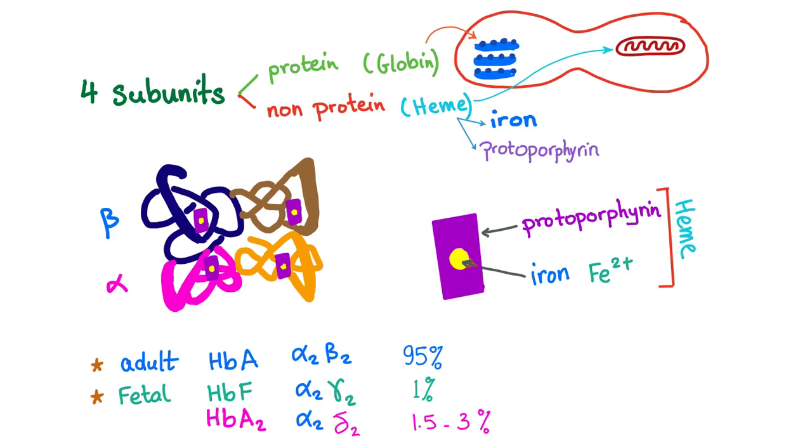So what are the subunits? We have alpha subunit and beta subunit. The normal adult will have two alpha subunits and beta subunits. That's the general type of hemoglobin. But let's go back to our structure.